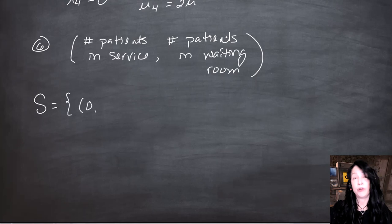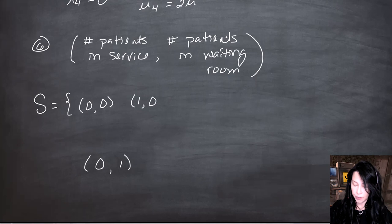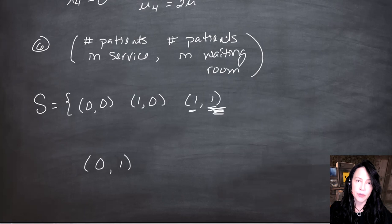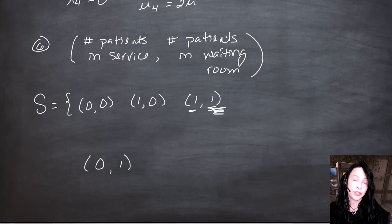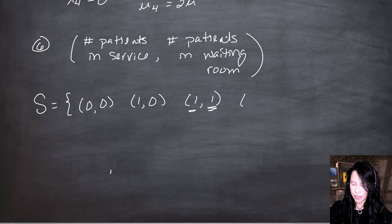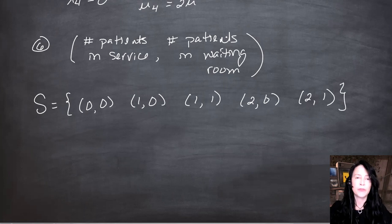One state is no one in service and no one waiting. There would never be no one in service and one person waiting, because that person could go right into service. There could be one in service and zero waiting, or one in service and one waiting — because a non-urgent patient won't tie up the second doctor. Other possibilities are two in service with zero waiting, or two in service and one waiting. There's never two-two, since no one is admitted if there's already one person waiting.